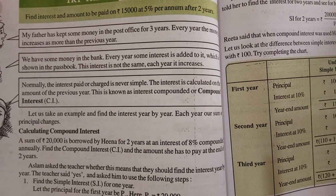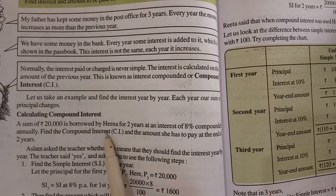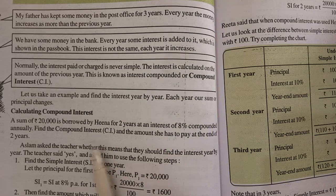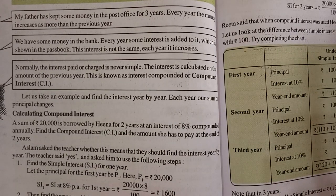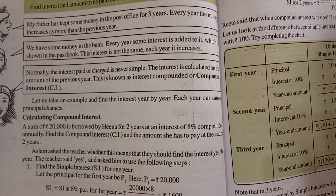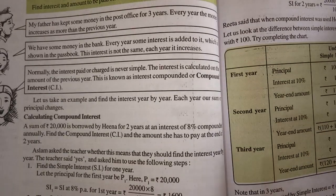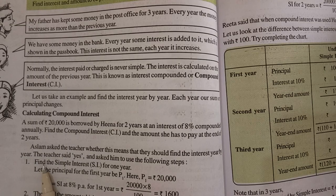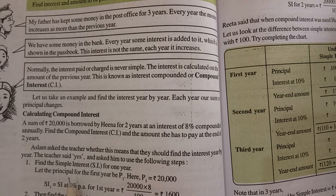Let us see an example. A sum of rupees 20,000 is borrowed by Hina for 2 years at an interest of 8% compounded annually. Find the compound interest and the amount she has to pay at the end of 2 years. Aslam asked the teacher whether they should find the interest year by year. The teacher said yes and asked him to use the following steps.